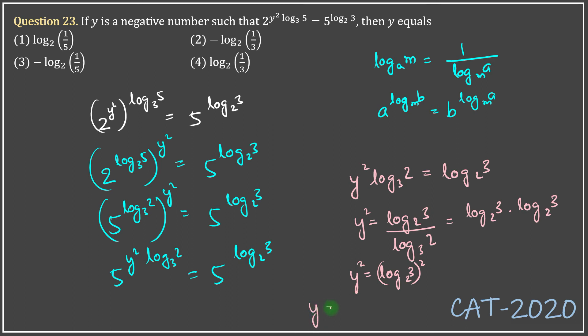So, y equals plus minus log 3 to the base 2. Now, it was given that y is a negative number. First thing I need to do is find the value of log 3 to the base 2 as in is it positive or negative.